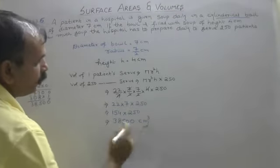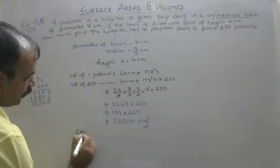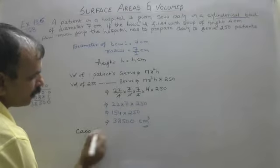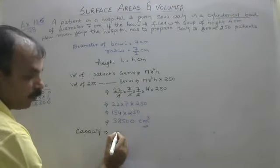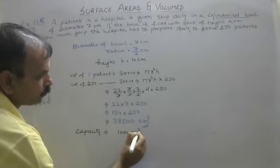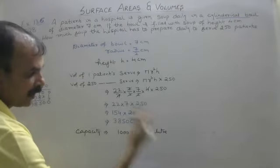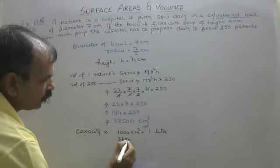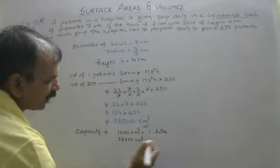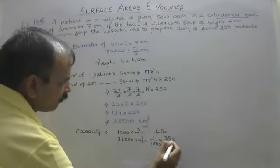This is our volume, but capacity in liters, capacity is equal to 1,000 centimeter cube is equal to 1 liter. So 38500 centimeter cube, how much is it? 1 by 1,000 into 38500.